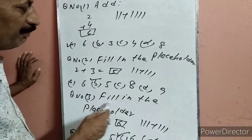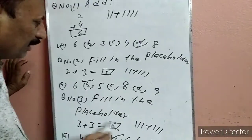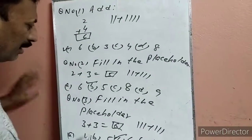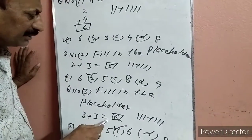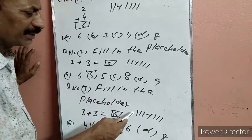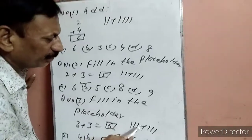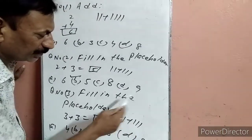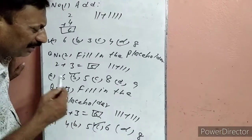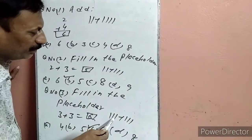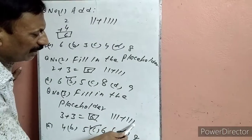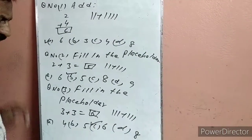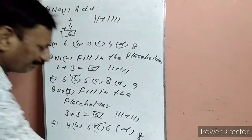Question number 3: Fill in the blank — 3 plus 3 equal to कितना? Options: 3+1, 2, 3, 4, 5, 6. Count करेंगे: 1, 2, 3, 4, 5, 6. 6 कहां पर है — C पर. C पर हमने टिक लगा दिया.